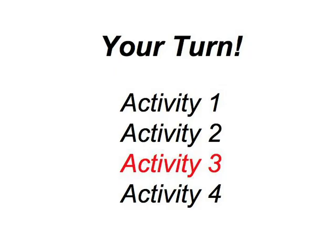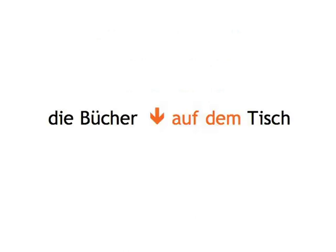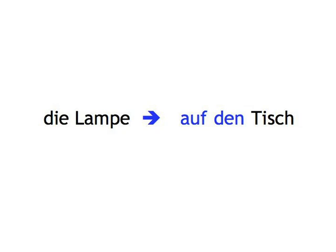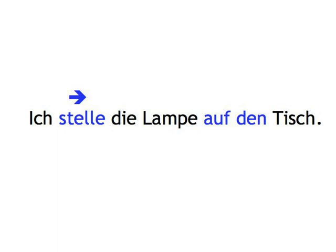In the third activity, we'll give you an object, the place where it belongs, and a sound. The sound will indicate whether you put the object in its proper place or whether you state that the object is already there. So if you hear 'die Bücher auf dem Tisch', you say 'die Bücher liegen auf dem Tisch'. If you hear 'die Lampe auf den Tisch', you say 'ich stelle die Lampe auf den Tisch'. Basically, you have to decide between liegen, which indicates location, and stellen, which is directional. Let's start: Lampe.